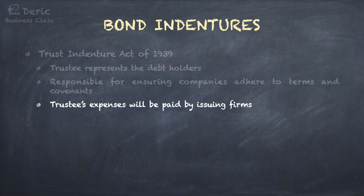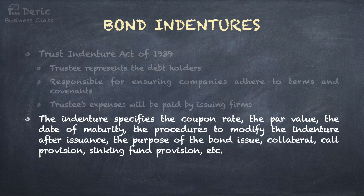In such a legal contract, the indenture specifies the coupon rate, the par value, the date of maturity, the procedures to modify the indenture after issuance, the purpose of the bond issue, collateral, call provision, sinking fund provision, and more.